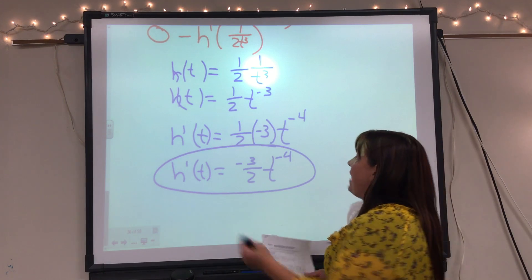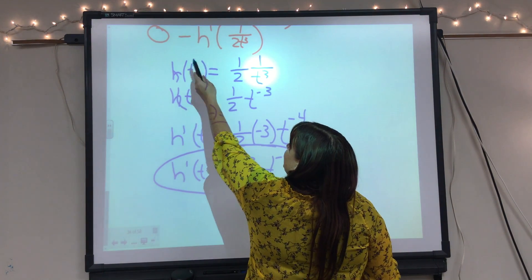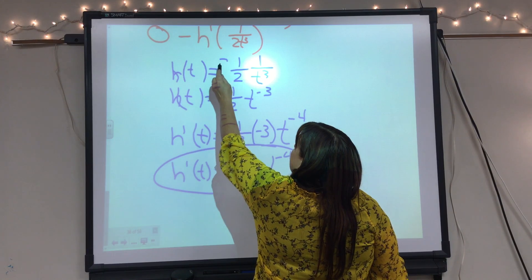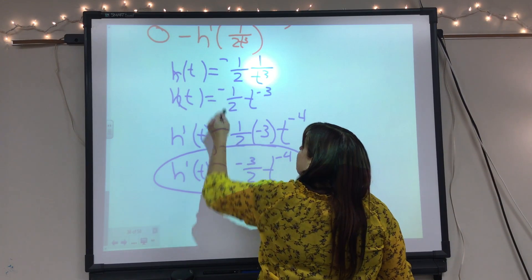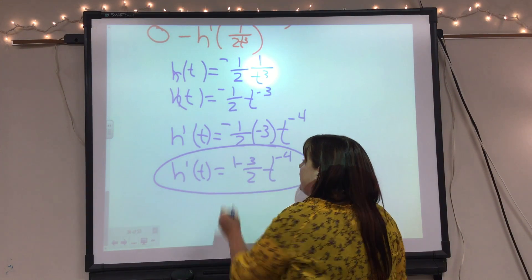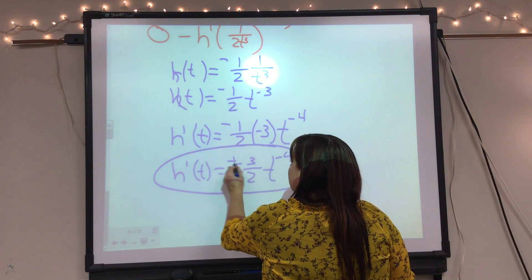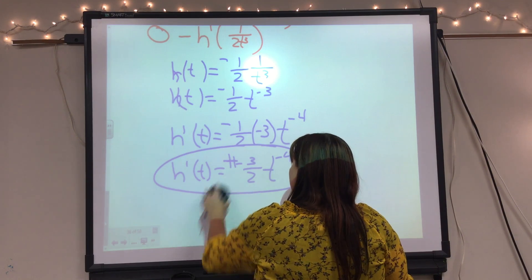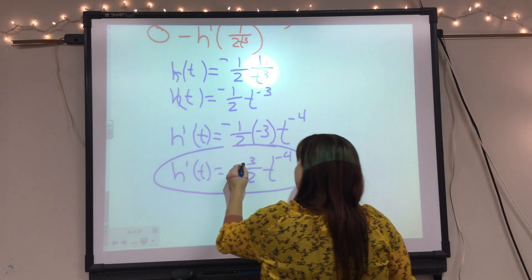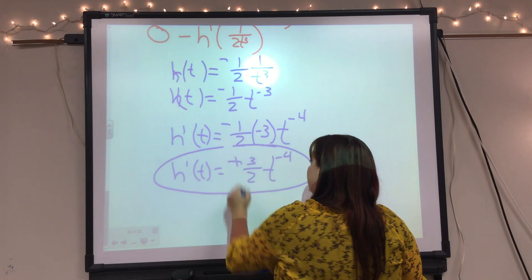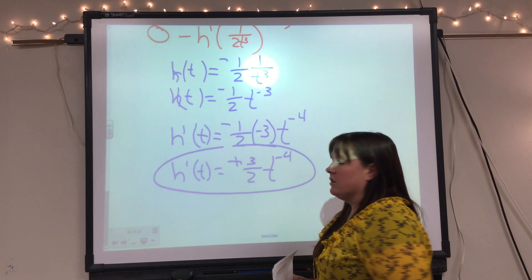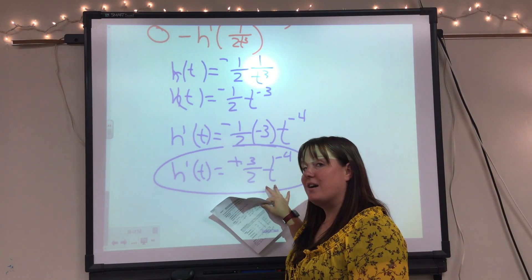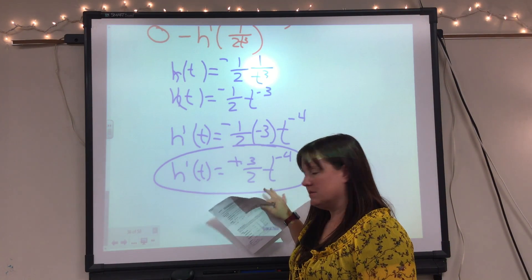I forgot a negative sign — that one-half was negative this whole time, so the negatives cancel and it becomes positive. So the correct answer is h′(t) = (3/2)t^(−4).